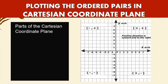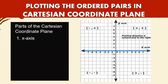Parts of the Cartesian coordinate plane: the x-axis is the horizontal line. It is a number line from positive to negative numbers. Positive is going to the right and negative is going to the left.